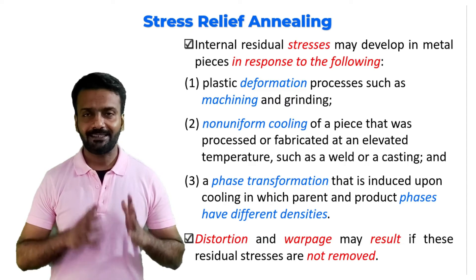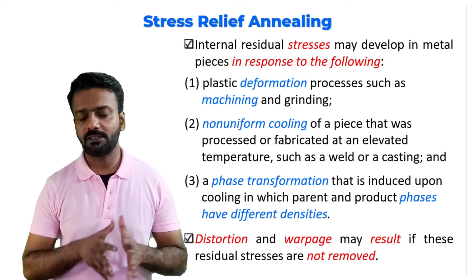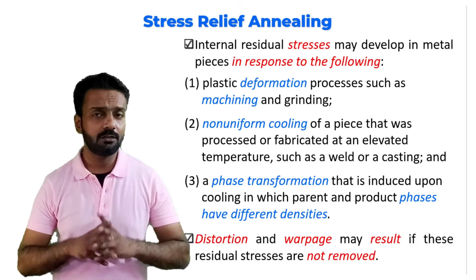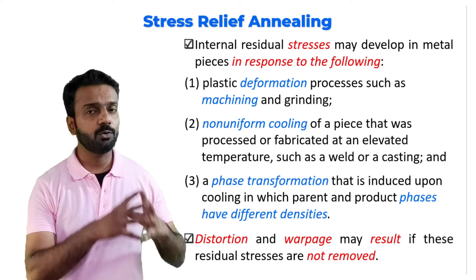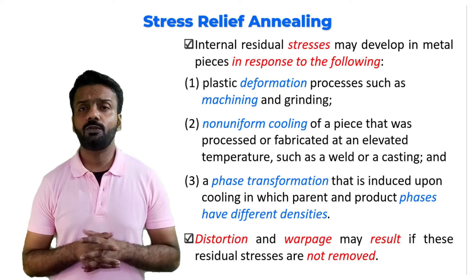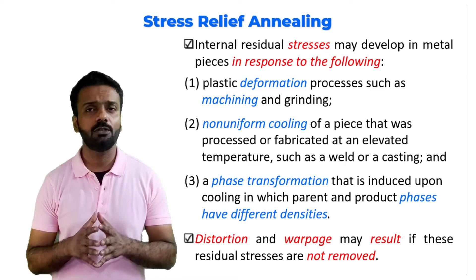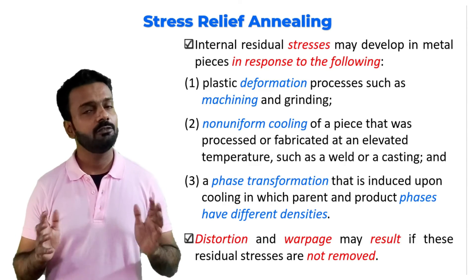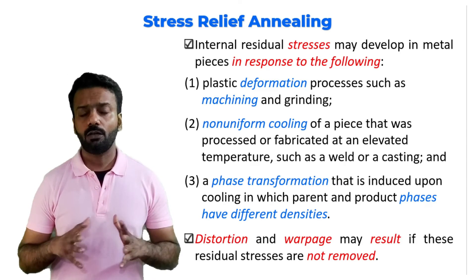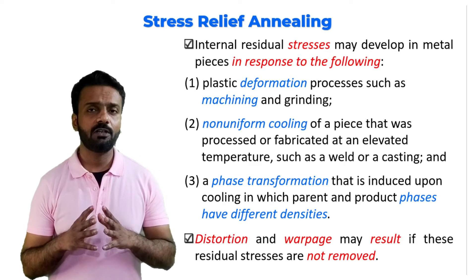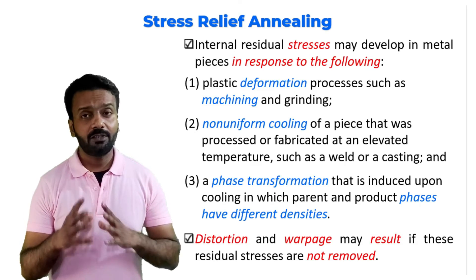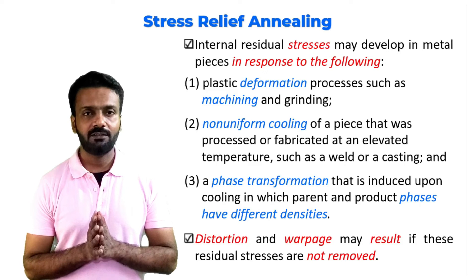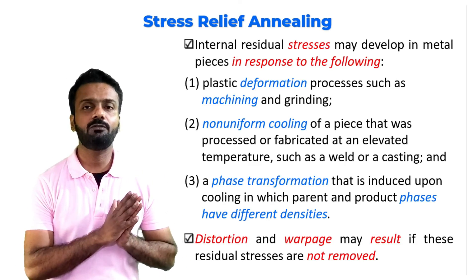The fourth type of annealing is stress relief annealing. Internal stresses can arise during plastic deformation processes such as machining and grinding; if not removed, the material is prone to failure and cracking. Non-uniform cooling during fabrication processes like welding also generates internal stresses. Additionally, during phase transformations, the phases may have different densities, causing further stress. If all these factors are not addressed there may be a lot of distortion in the material.